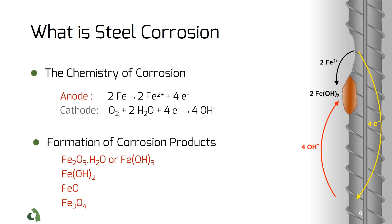In the cathode, oxygen combines with water and the electrons to release hydroxide ions. This shows that the reactions require both water and oxygen to occur.